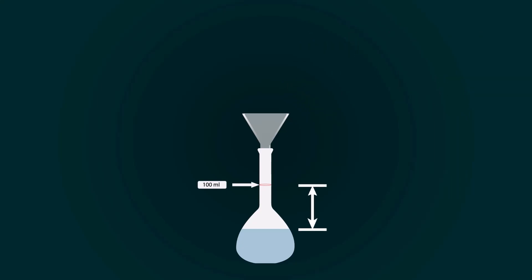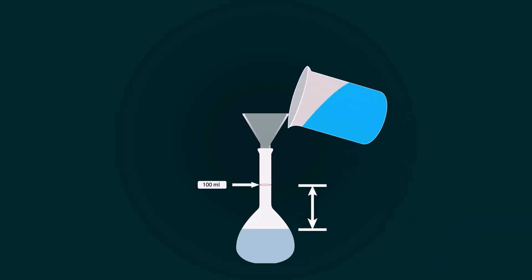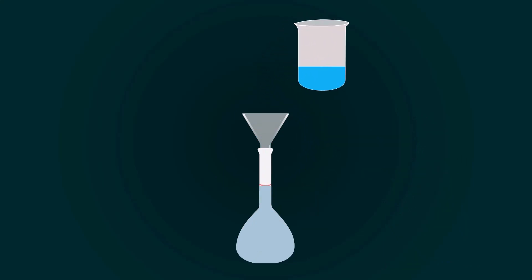For that, you have to add more distilled water into it. So take some distilled water into an empty beaker and pour it into the volumetric flask to fill it up to the 100 ml mark.